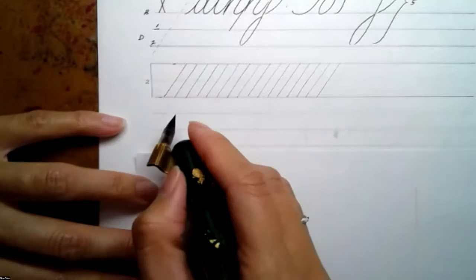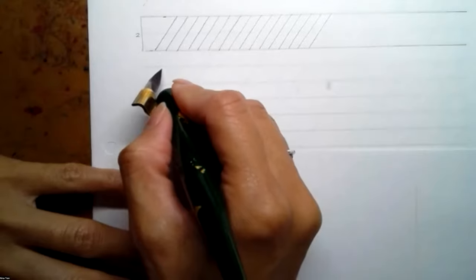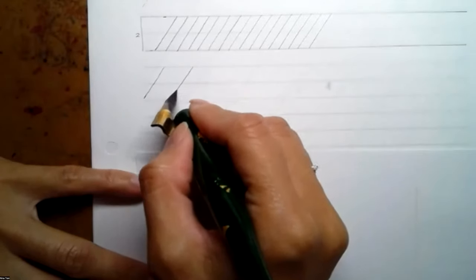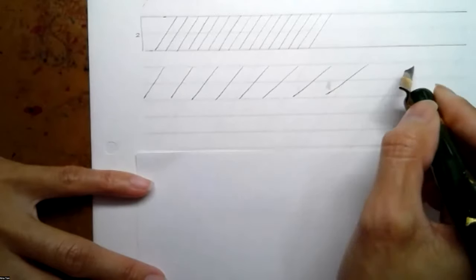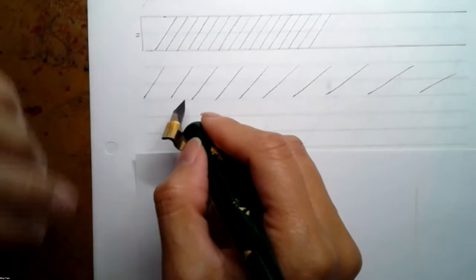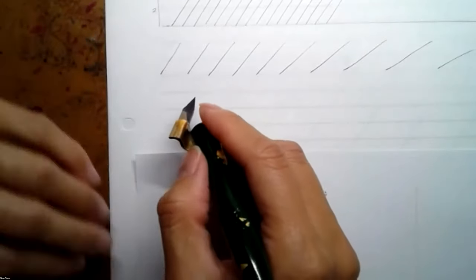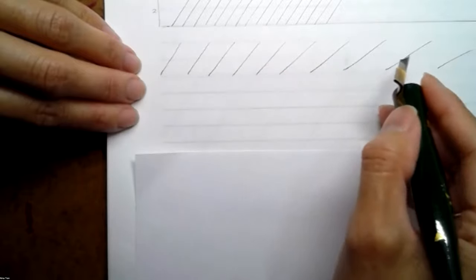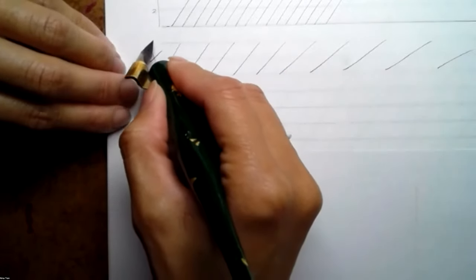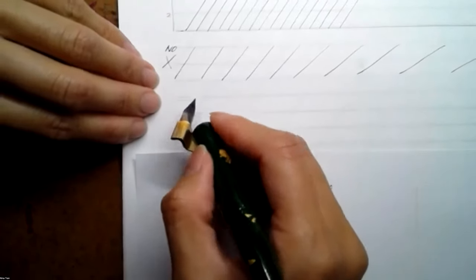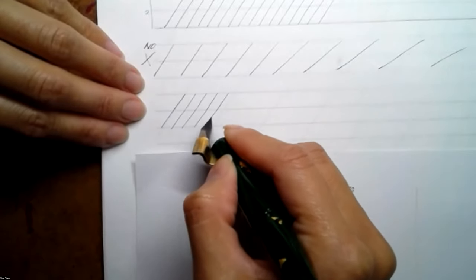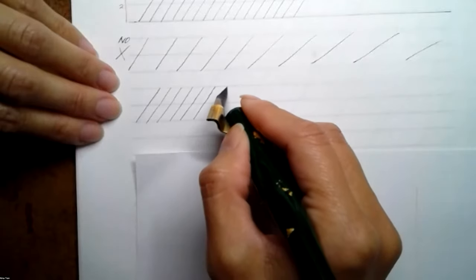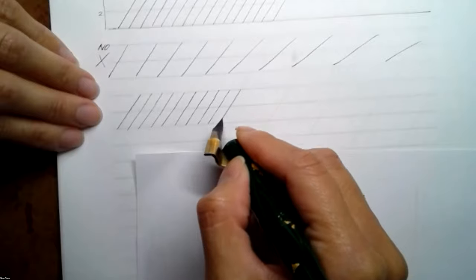One of the most important things you need to do as you write is move your paper. After every two or three strokes, you move your paper to the left. The reason why you don't want to move your hand instead is that as you move your arm across the page, you lose that angle and your strokes become more slanted. What you want to do instead is pull a few lines and then move your paper.